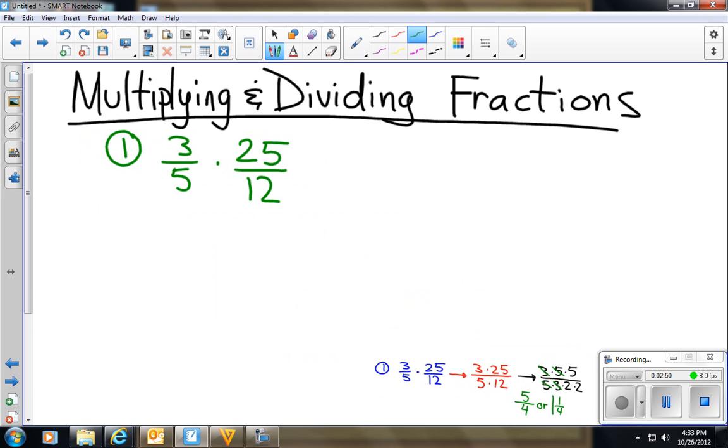And using this rule, what we're looking at is we can simplify any numerator with any denominator. We can simplify it going up and down. We cannot simplify it going across. So, for example, if I want to, I can say, well, the 5 and the 25 have a common factor of 5. So 5 divided by 5 is 1, 25 divided by 5 is 5. And then I can look at the 3 and the 12. 3 and 12 can both be divided by 3. Therefore, 3 divided by 3 is 1. 12 divided by 3 is 4. And there's nothing else I can simplify at this point.